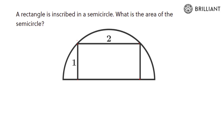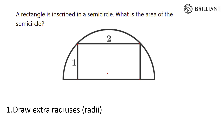The two tricks we're going to use are: firstly, draw extra radiuses or radii. We have this semicircle — let's draw in the radius and see if it's useful. We have this radius over there which doesn't feel that useful, and similarly we have this radius here. What's good is we know that these radiuses are always the same length. Can you see where we might find a useful radius?